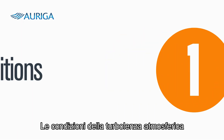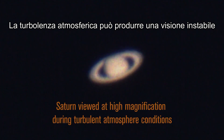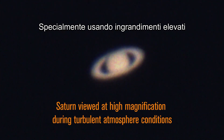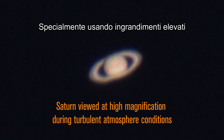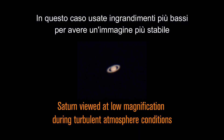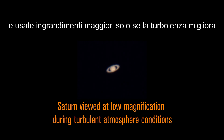Number one: seeing conditions. A turbulent atmosphere will produce an unstable view, especially when using higher magnification. Use lower magnification to help steady the views and move up to higher magnification only if the seeing improves.